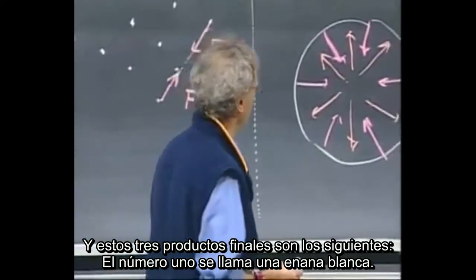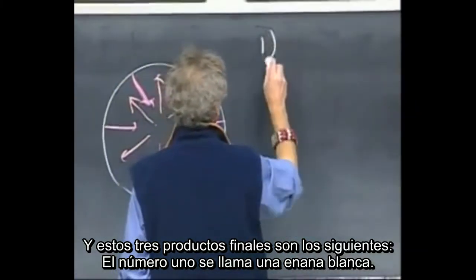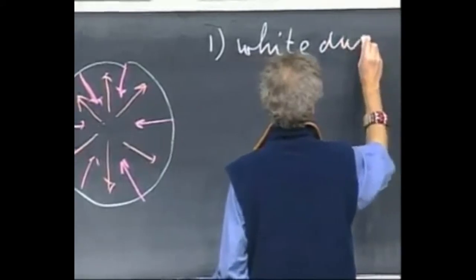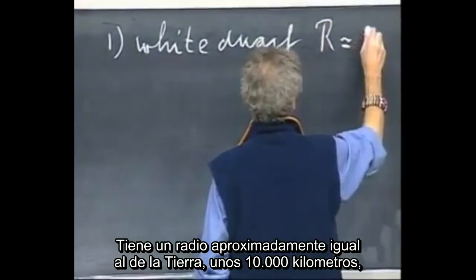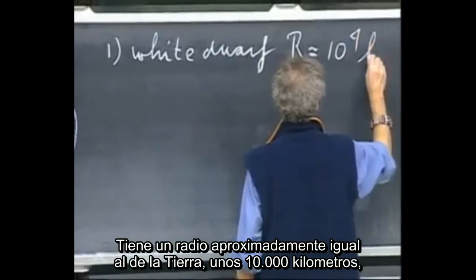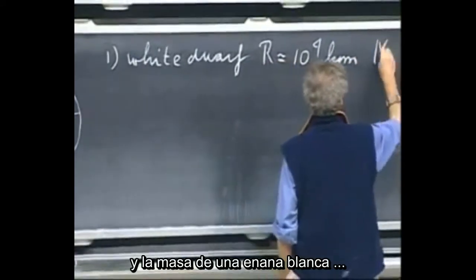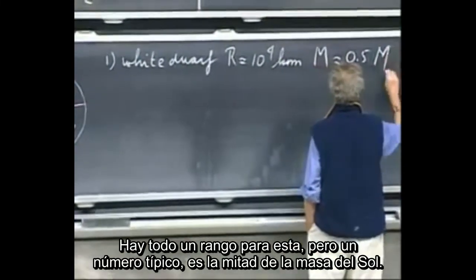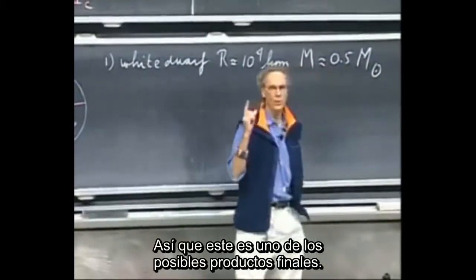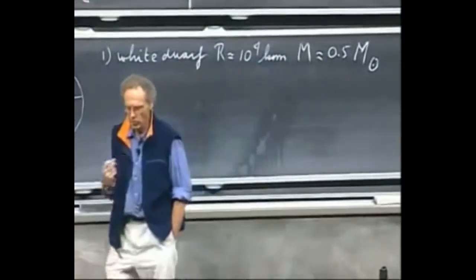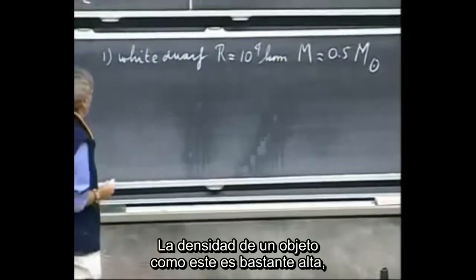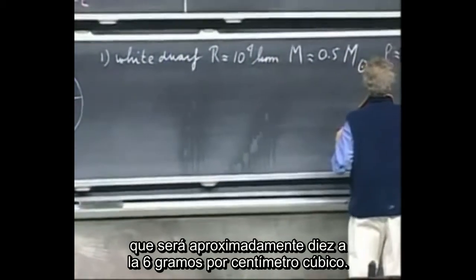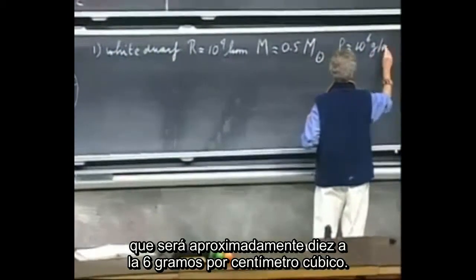These three end products are the following. Number one is called a white dwarf. It has a radius approximately the same as the Earth — some 10,000 kilometers. The typical mass of a white dwarf is about half the mass of the sun. This will be the fate of our sun. The density of such an object is quite high — roughly 10 to the 6 grams per cubic centimeter.